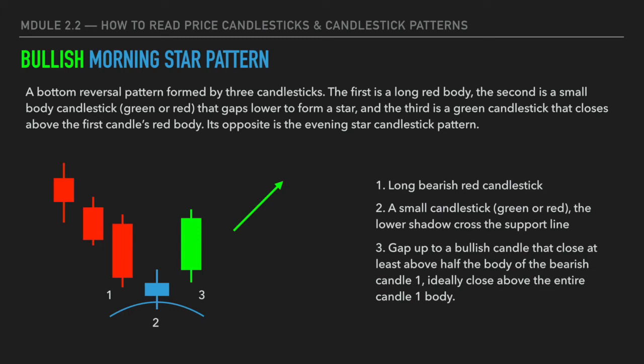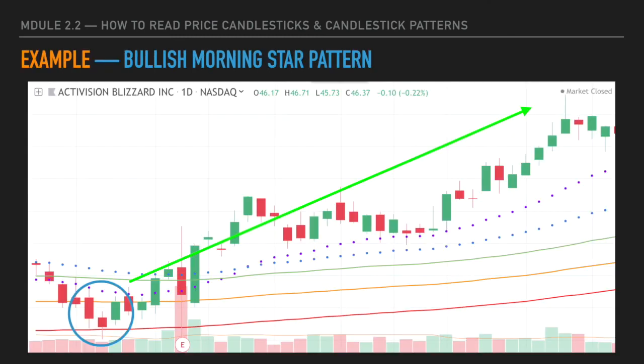Now the next two patterns are my personal favorites that I use on a daily basis. Let's start with the bullish morning star pattern. It is formed by three candlestick bars: the first is a long bearish red bar; the second is a small bar with the lower shadow crossing below the support level — it can be either green or red; and the third, most important bar, is a green bar with a long real body that closes above at least half of the first red bar's real body. The bullish morning star is considered a bottom reversal pattern.